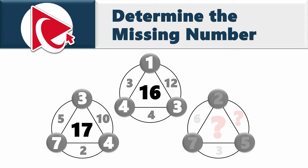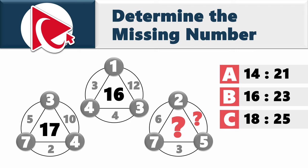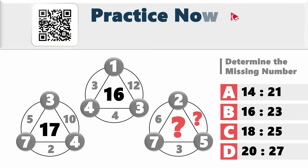The third shape is a little more challenging because two numbers are missing. Numbers in the small circle are 5, 7, and 2, and there are two numbers inside the large circles: 6 and 3. You need to calculate and select both missing numbers from four choices. Choice A: 14 and 21. Choice B: 16 and 23. Choice C: 18 and 25. Choice D: 20 and 27.